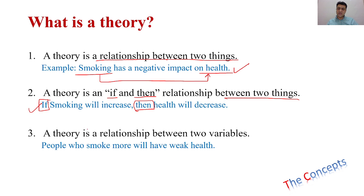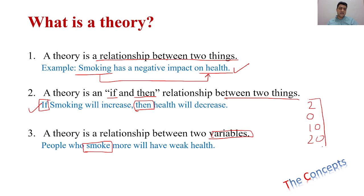Another definition of a theory can be that a theory is a relationship between two variables. For example, people who smoke more will have weak health. We are calling these things variables because if we start collecting data from person to person about how many cigarettes a person smokes, it will vary — one person may smoke two cigarettes, someone zero, some 10, some 20. Similarly, if we collect data about health, some people will have weaker health, say 1 out of 10, and some very good health, 10 out of 10. So this is also a variable. Theory is simply a relationship between two or more things.